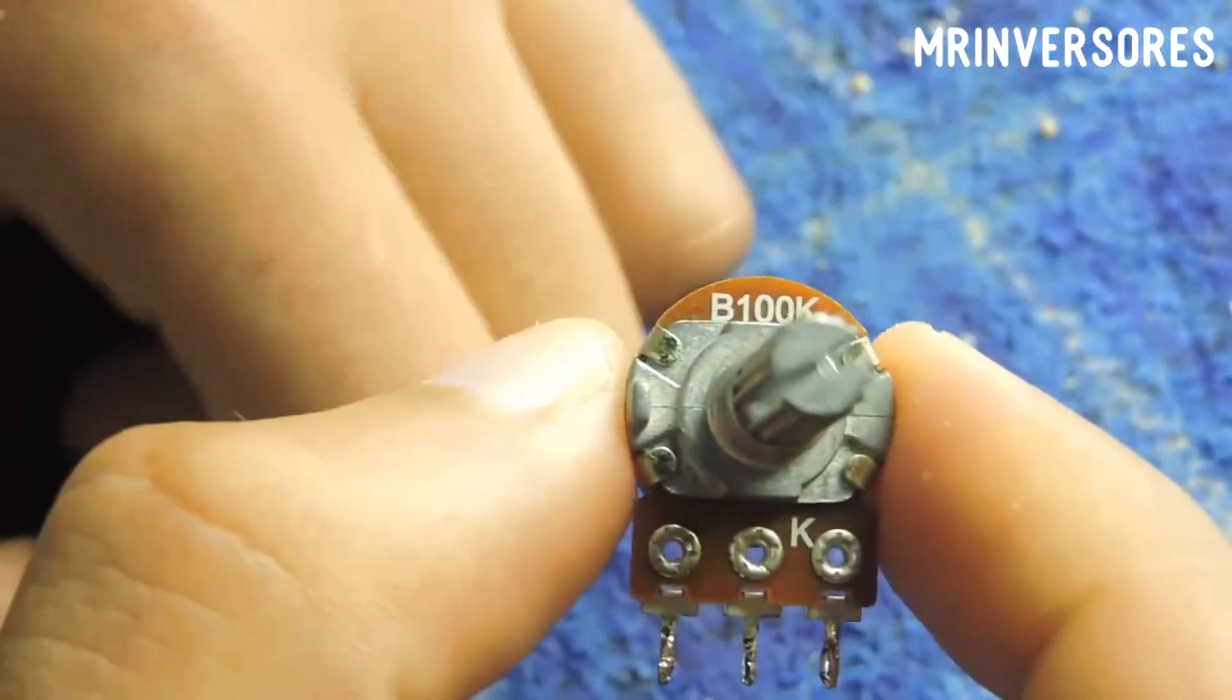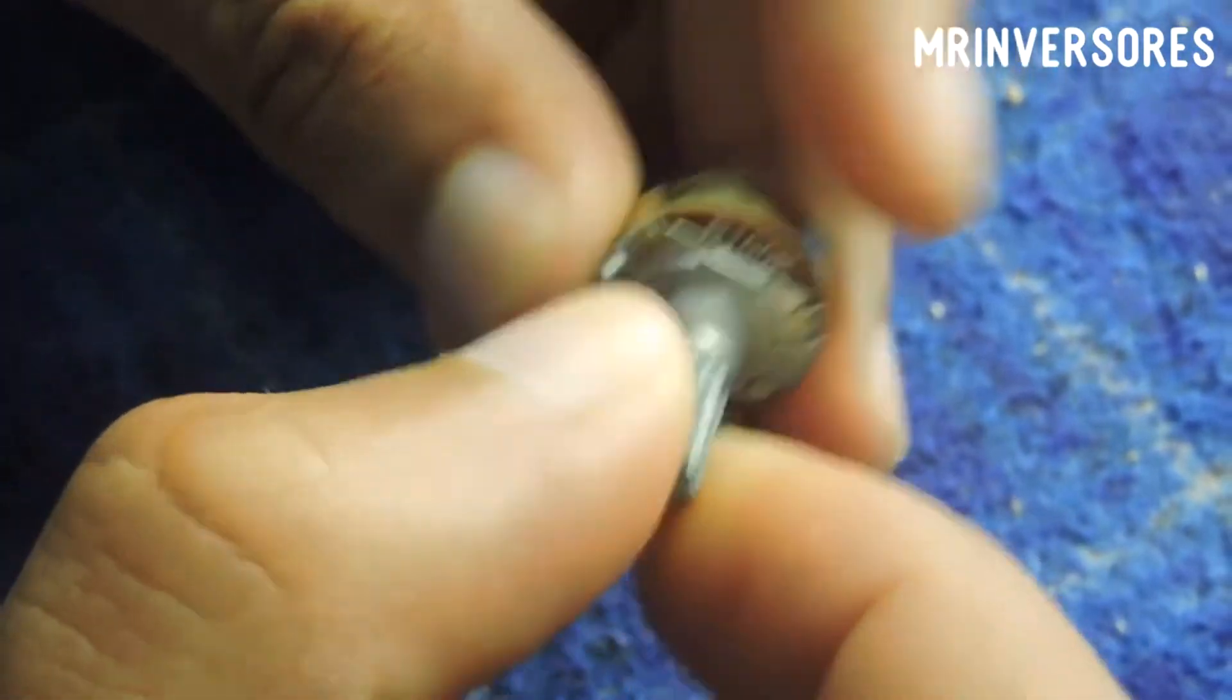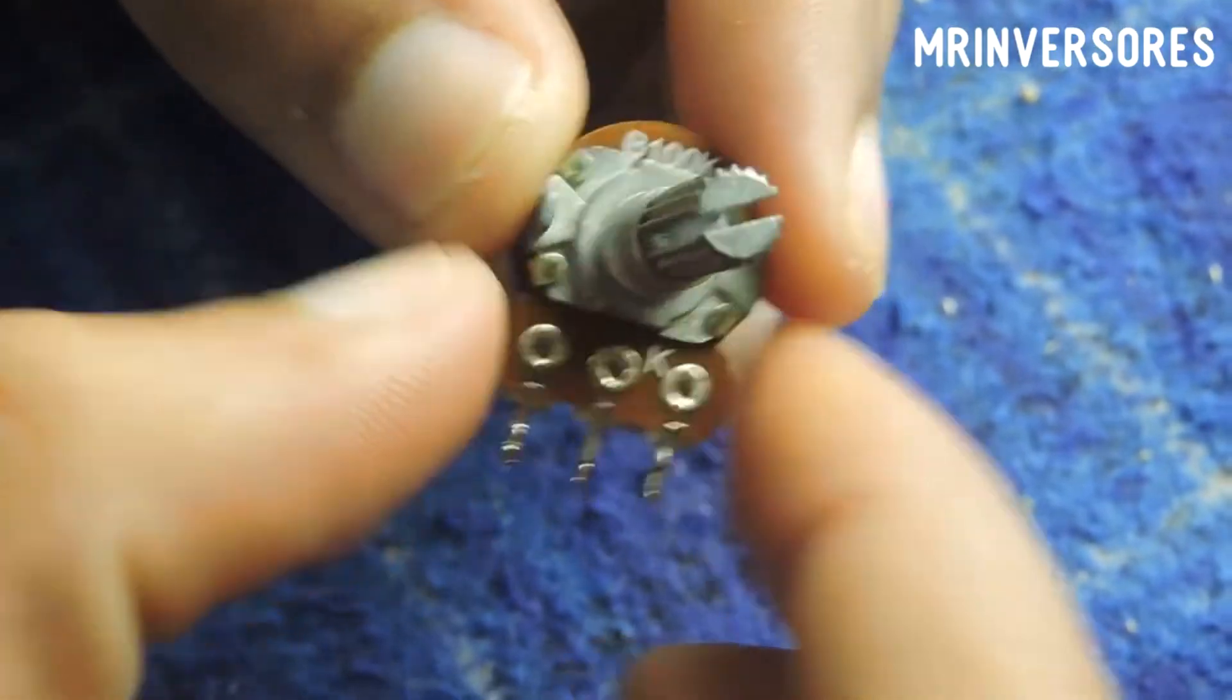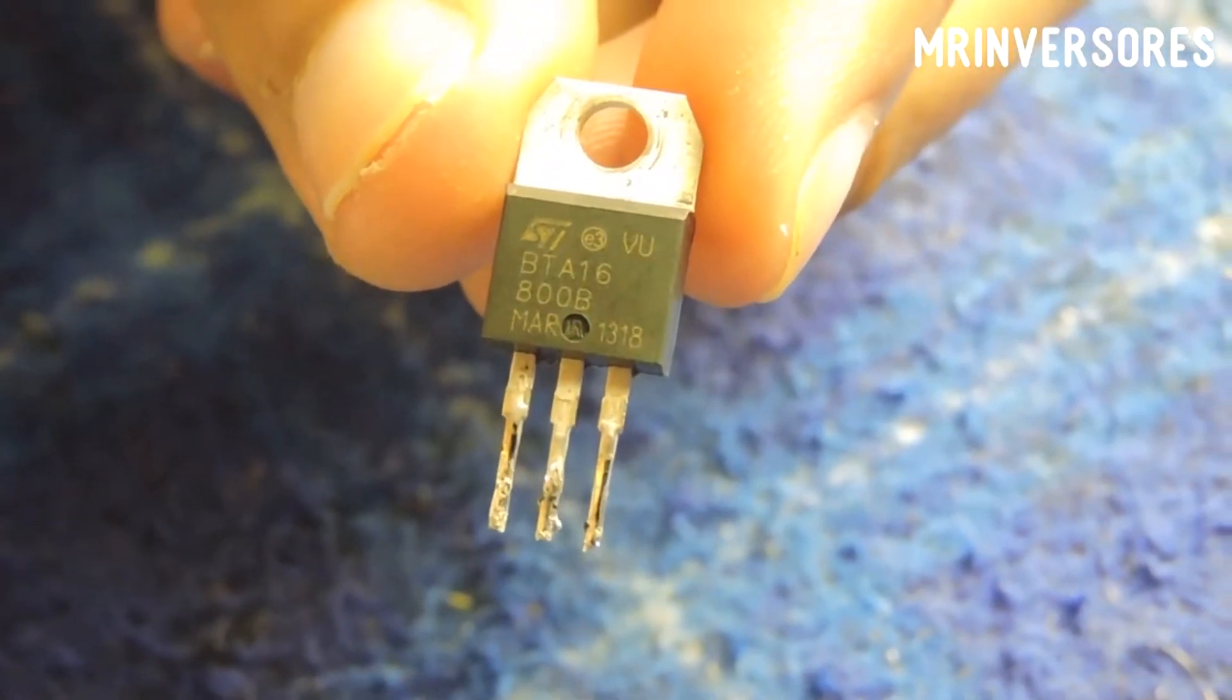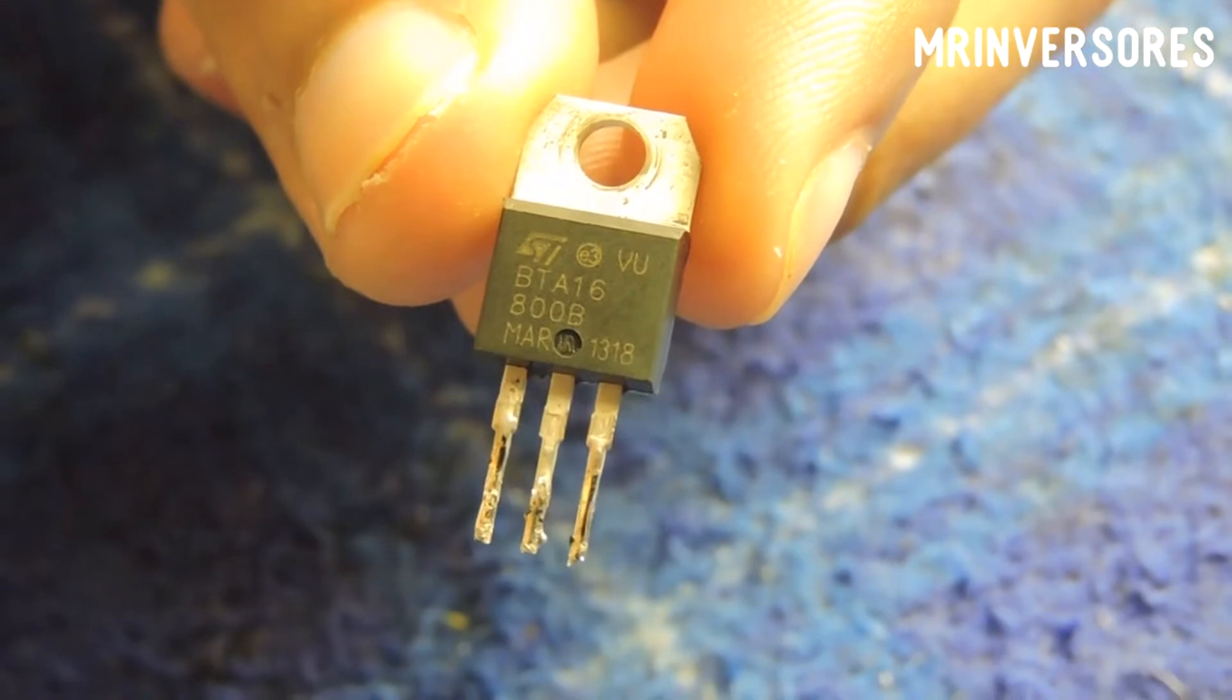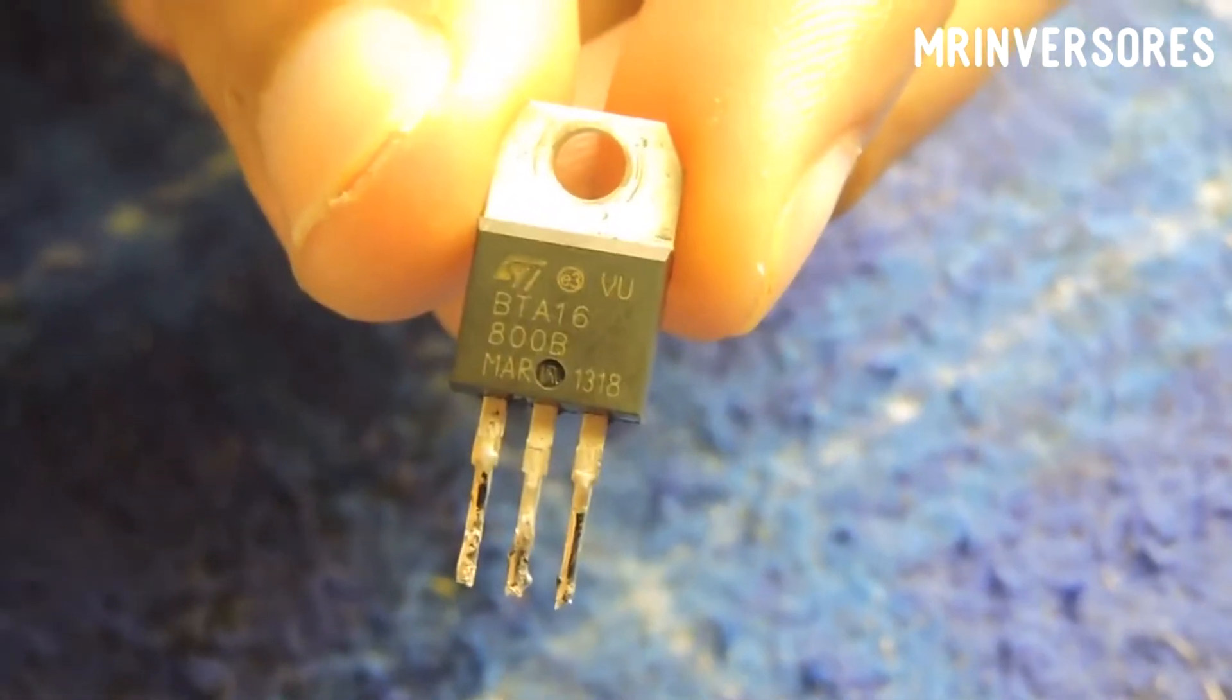This is the 100k potentiometer, our first item in the material list. If you want to put a slightly larger 150k potentiometer, it's even better because it increases the sensitivity. In my case I'm using the 100k one because it will perfectly supply my condition for using the dimmer. Our second component is the BTA 16 - it's a 16 amp triac for 600V. If I'm not mistaken, this one is for 800. This triac will supply my need for the soldering iron. I'll still put a heat sink on it - I think it's not even going to heat that much.